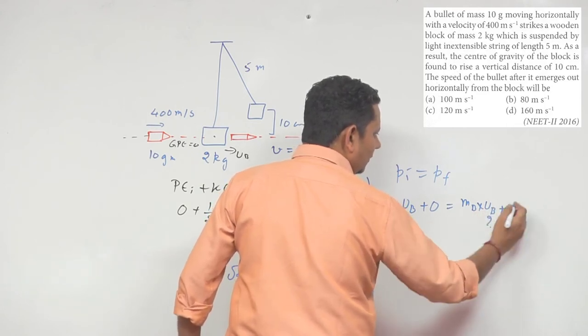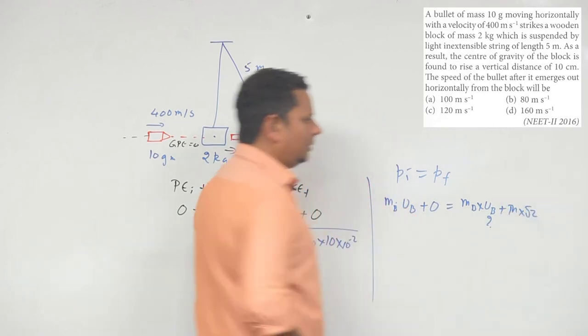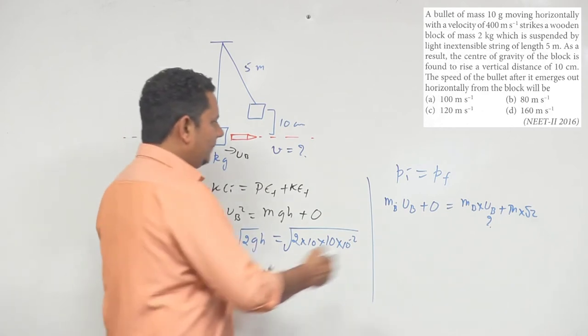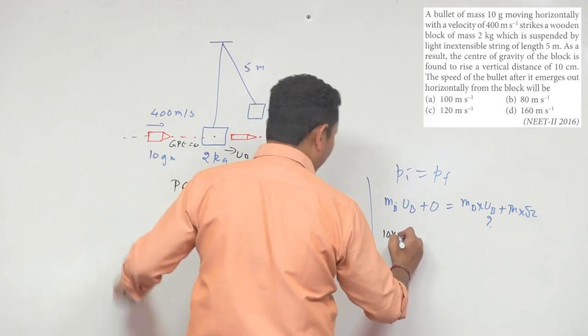and we'll get our answer. The mass of the bullet is 10 grams, which is 10 times 10 to the power minus 3, multiplied by 400. This is our initial momentum. Final momentum will be mass of bullet, 10 times 10 to the power minus 3, multiplied by velocity of bullet, plus 2 multiplied by